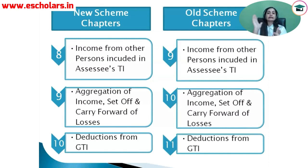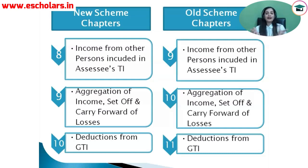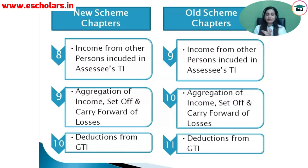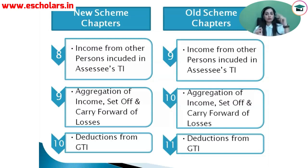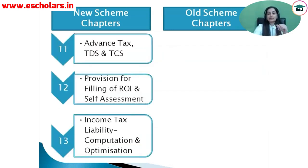In the old scheme's third module, we see income from other persons included in assessee's total income, which is our clubbing chapter. Next is aggregation of income, set off and carry forward of losses, and deductions from gross total income — so three chapters are covered in module 3. In the new scheme, these same three chapters — income from other persons, aggregation of income and set off, and deductions from gross total income — come into module 2, section number 3.